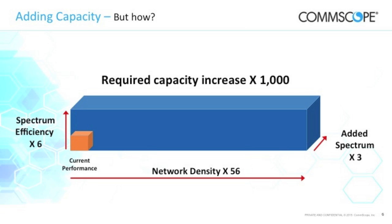So how can we add capacity? Over the last decades there were three key aspects: adding spectrum, which added a factor of three; increasing spectrum efficiency, adding a factor of six; but the biggest factor has been increasing network density — more sectors with more radios, which gives more capacity. That is still the number one factor. If we need to increase capacity by a factor of 1,000 over the next years, the focus is still adding more sectors.